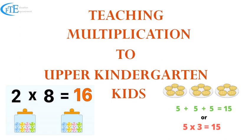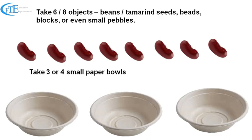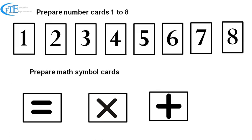Teaching multiplication to upper kindergarten children. Take six, eight, or ten objects or counters - it could be bean seeds, tamarind seeds, beads, blocks, or even small pebbles. Then take three to four small paper bowls. Prepare number cards from 1...